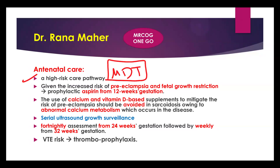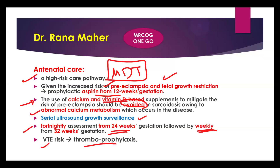Avoid vitamin D supplementation in sarcoidosis because of abnormal calcium metabolism. Offer serial ultrasound growth surveillance due to risk of growth restriction — fortnightly from 24 weeks, then weekly from 32 weeks. VTE risk assessment and thromboprophylaxis are required because sarcoidosis carries increased risk of venous thromboembolism, along with pre-eclampsia and fetal growth restriction.